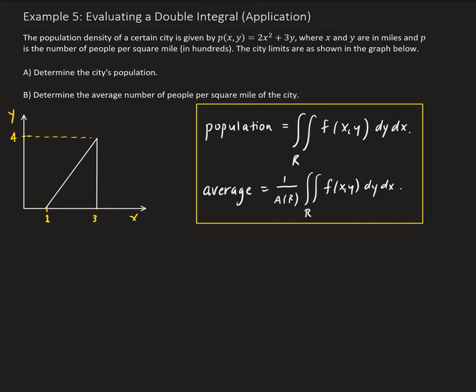In this example, we are going to look at an application involving the double integral. We're given a population density of a certain city, given by the equation p(x,y) = 2x² + 3y, where x and y are in miles and p is the number of people per square mile, in terms of hundreds.